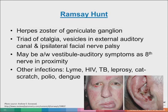Ramsay Hunt syndrome is herpes zoster affecting the geniculate ganglion. Patients present with a triad of otalgia, vesicles in the external ear canal, and ipsilateral facial nerve palsy. It may also be associated with vestibuloauditory symptoms, as it is very near the eighth nerve.